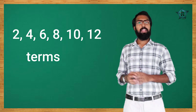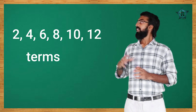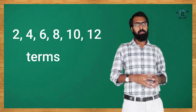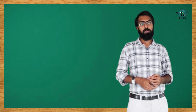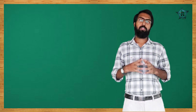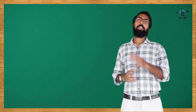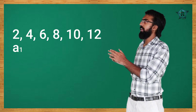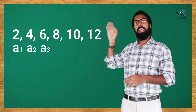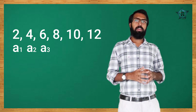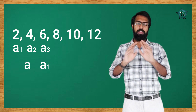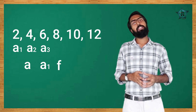In terms of the arithmetic sequence, 2 is the first term (A1), 4 is the second term (A2), 6 is the third term (A3), and so on up to the nth term. Terms are represented by small letter alphabets like a, b, x — for example A1, A2, A3, A4, A5. The first term has a special name: it can be written as A1 or simply as the first term.